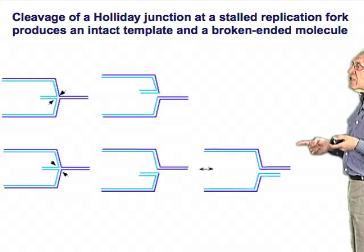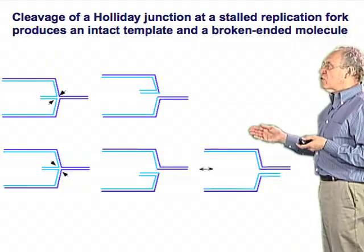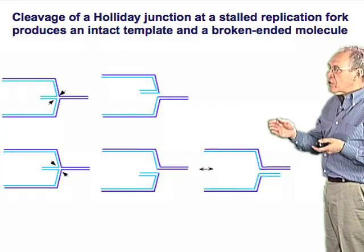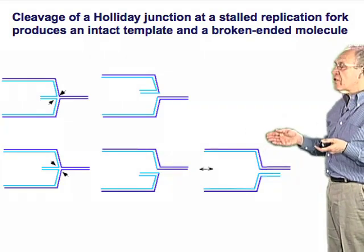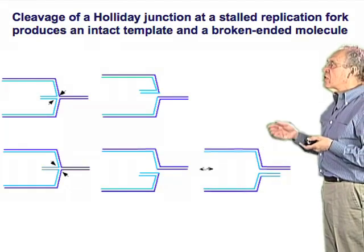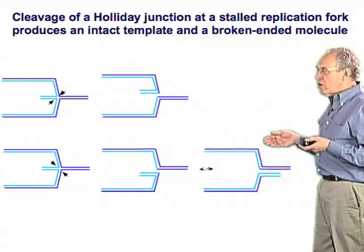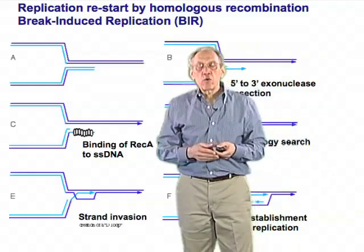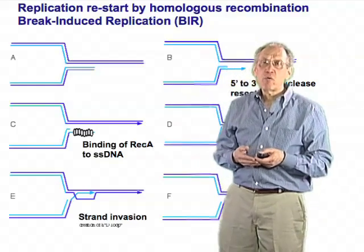Essentially what has happened is that the DNA replication fork, coming in this direction, reached a point, arrested, backed up, formed this regressed replication fork, and then broke at the place where the lesion had occurred — giving the cell a chance to repair this break in a different way. That different way is the homologous recombination mechanism known as break-induced replication.